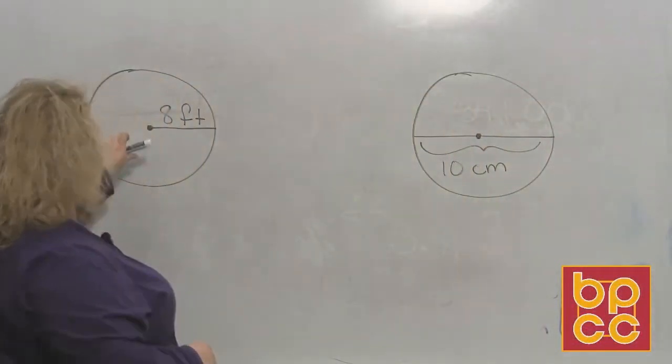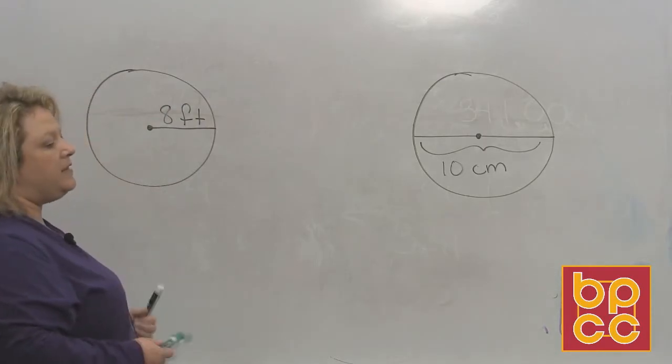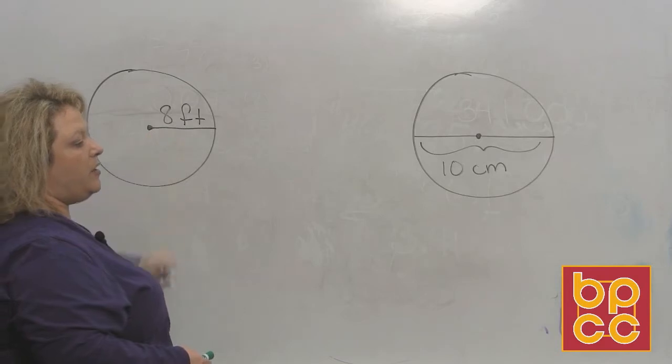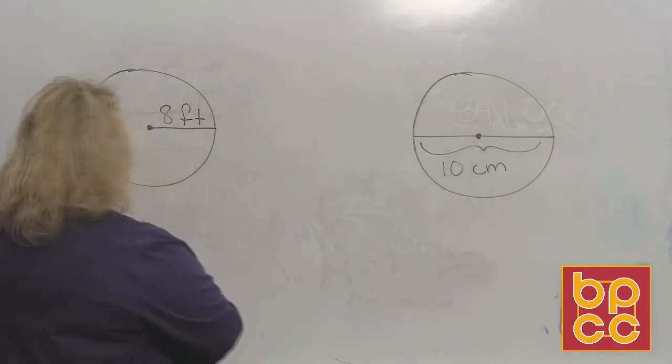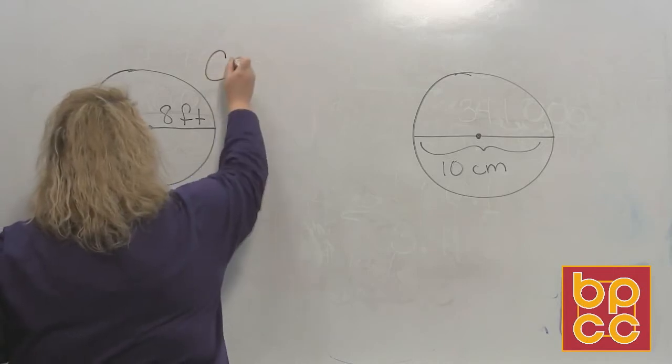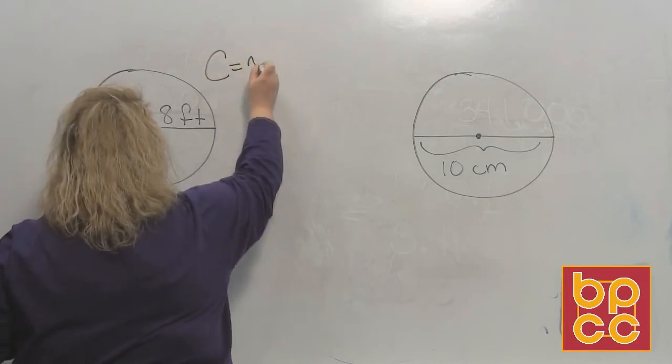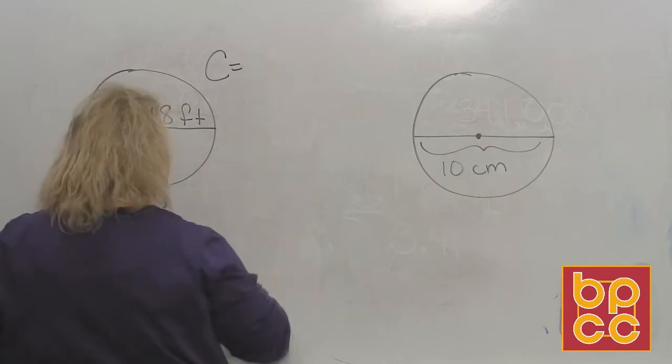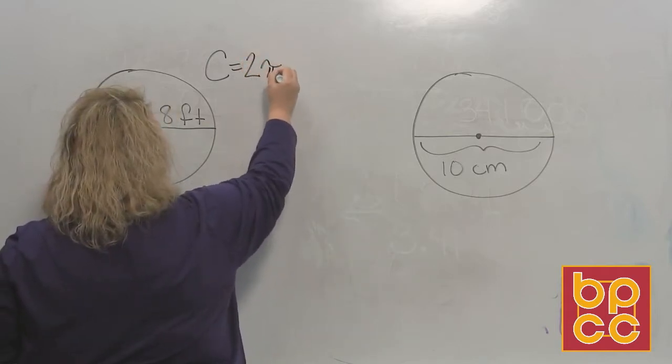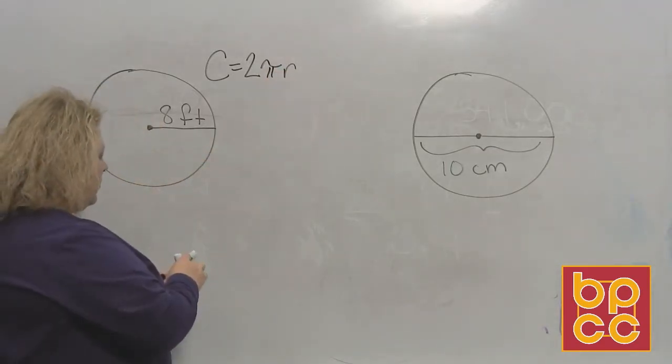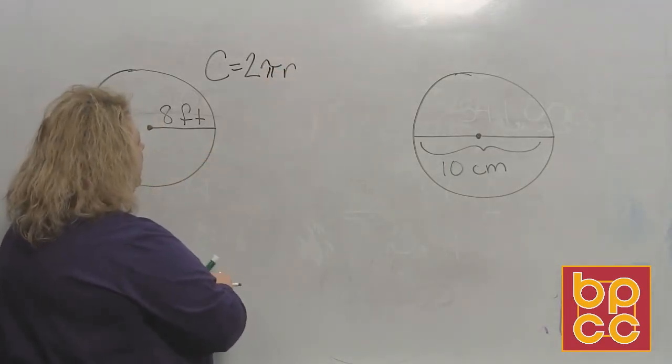Okay, so first, the one that they give me is 8 feet, and they give me the radius, because the radius goes from the center to any point on the circle. So I want to use my formula that says circumference is equal to 2 times pi times the radius. Since they gave me the radius, let's use that.